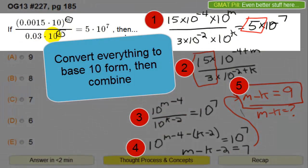Okay, so let's go over concepts. You basically have a fraction here equals another expression, and both of them have times 10 to the something power. The idea, in order to find the difference between the exponents m and k, is to combine these things into something times 10 to the something power. So 0.0015 becomes 15 times 10 to the minus 4 power because there are 4 decimal places. And 0.03 becomes 3 times 10 to the minus 2 power because there are 2 decimal places to move in front of the 3.